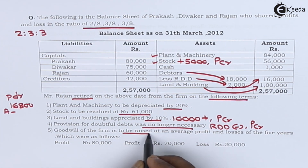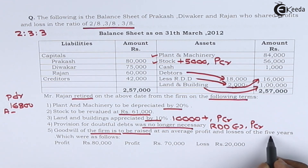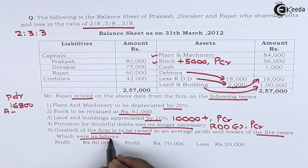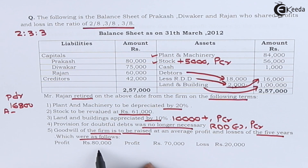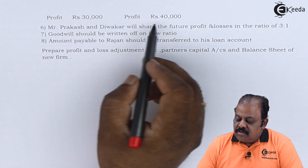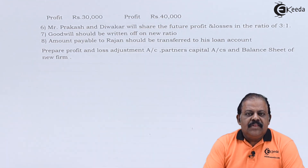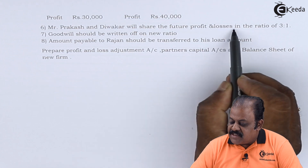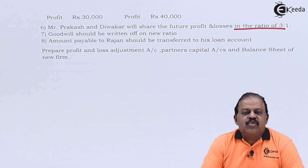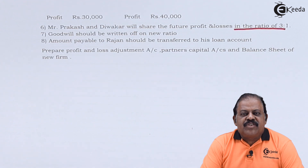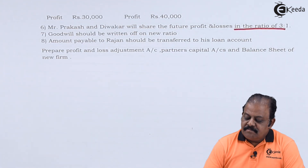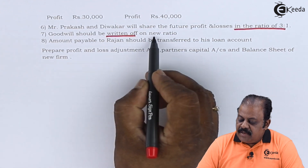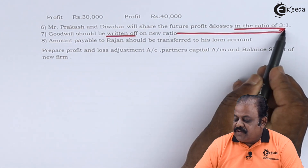Goodwill of the firm is to be raised at an average profit or loss of 5 years. The profits and losses were: profit 80,000, profit 70,000, loss 20,000, profit 30,000, profit 40,000. Prakash and Diwakar will share future profits and losses in the ratio of 3:1. Goodwill should be written off in the new ratio of 3:1.